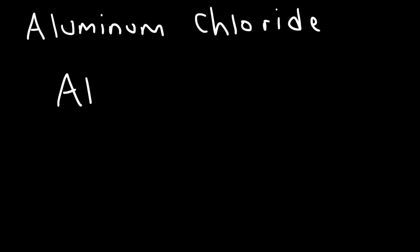For instance, let's say if we want to name aluminum chloride. Let's try this example. We know that aluminum has a 3 plus charge, and chloride is a halogen with a negative 1 charge. So how do we work with this?